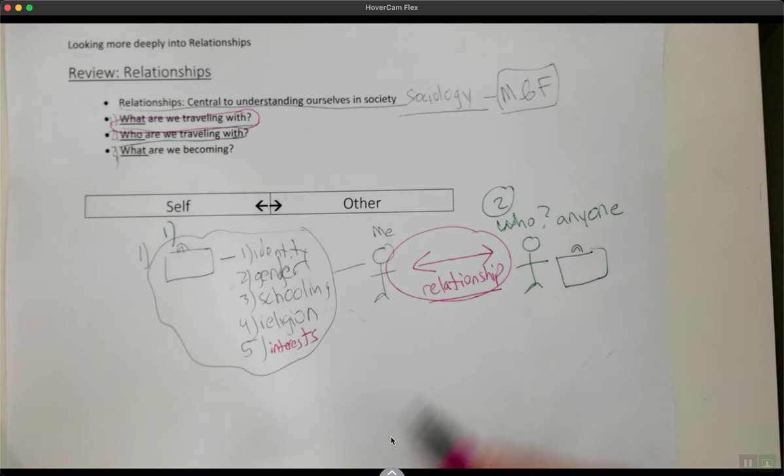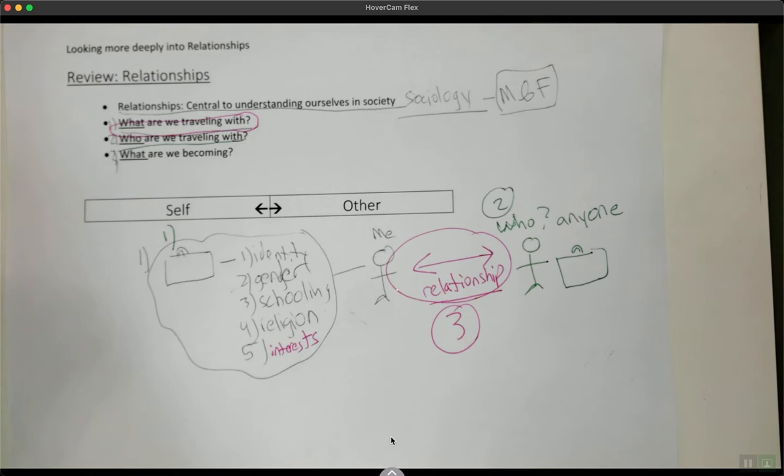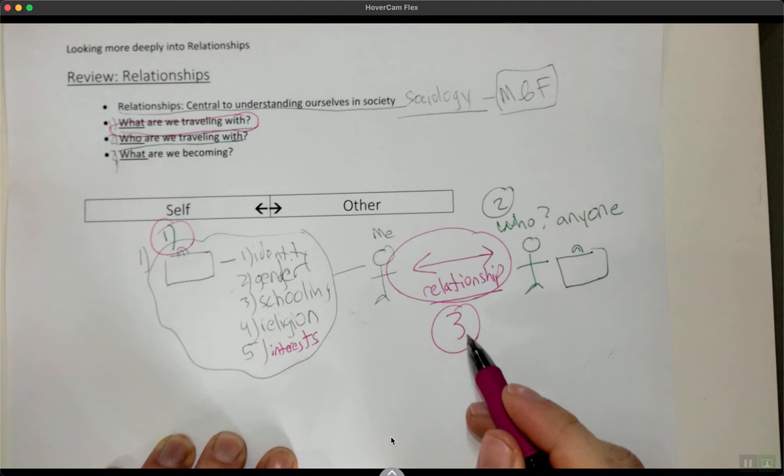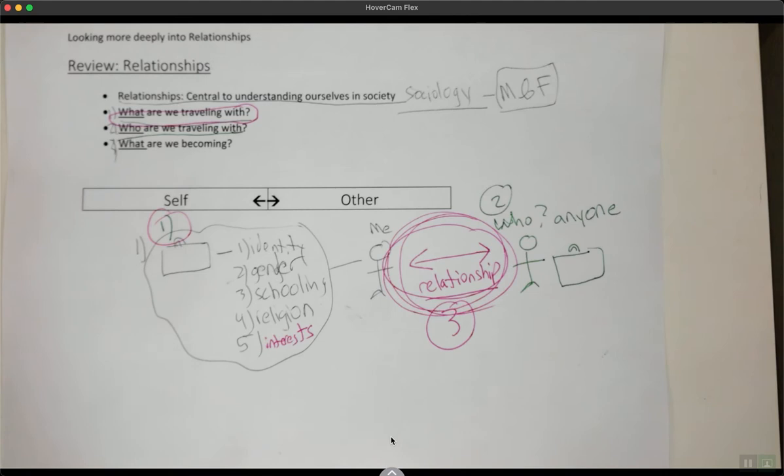So that gets to this number three: what are we becoming? In any relationship, there's at least three components. First, who we are, what do we bring with us? Two, who we're interacting with, broadly speaking, anyone we interact with. And finally three, this dynamic thing that's constantly shifting and changing as we interact with each other. So the third part is the relationship itself. I use a key term here that we're going to jump into: this idea of becoming.